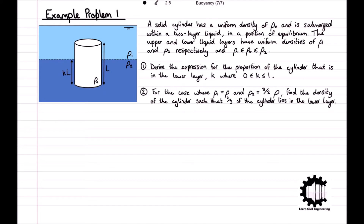The diagram shows a solid cylinder which has a uniform density of rho_0 that is submerged within a two-layer liquid in a position of equilibrium. The upper and lower liquid layers have uniform densities of rho_1 and rho_2 respectively, and we know that the density of the cylinder rho_0 is greater than or equal to rho_1 and less than or equal to rho_2.